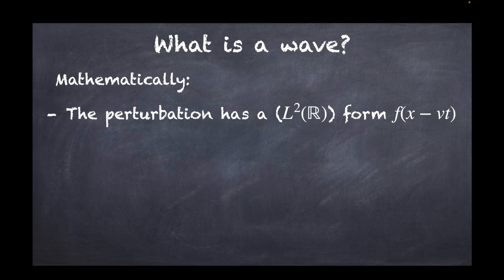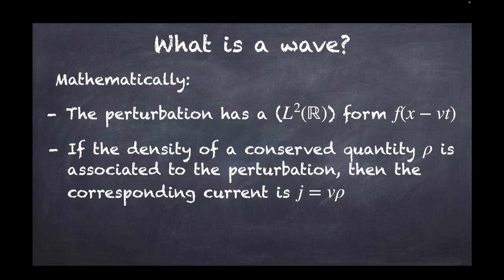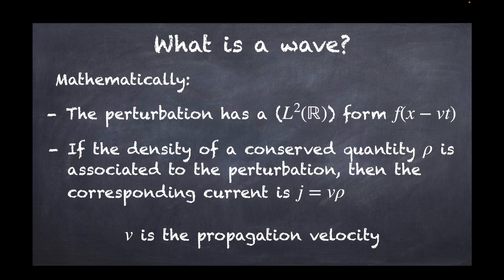Now there is a second way you can characterize a wave, or at least the propagation of it. The density of a constant quantity that you're going to call rho is associated to the perturbation, in which case you would have that the current is equal to v times rho, where v here represents the propagation velocity.